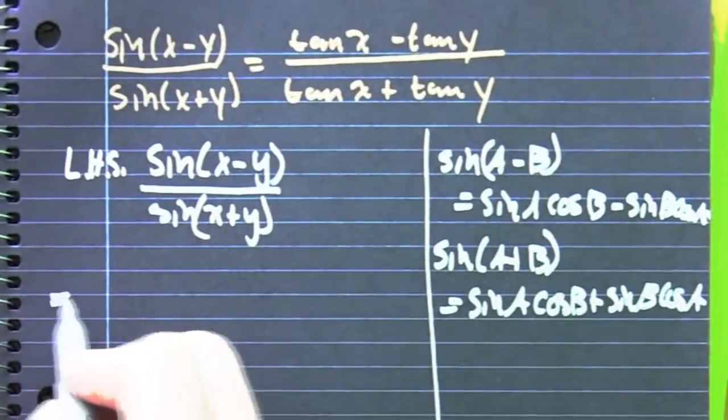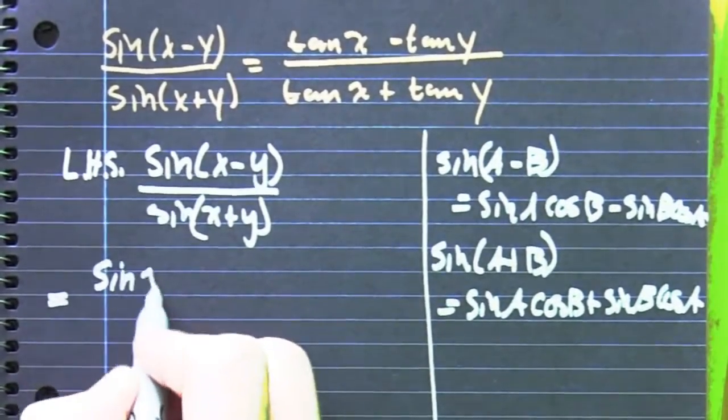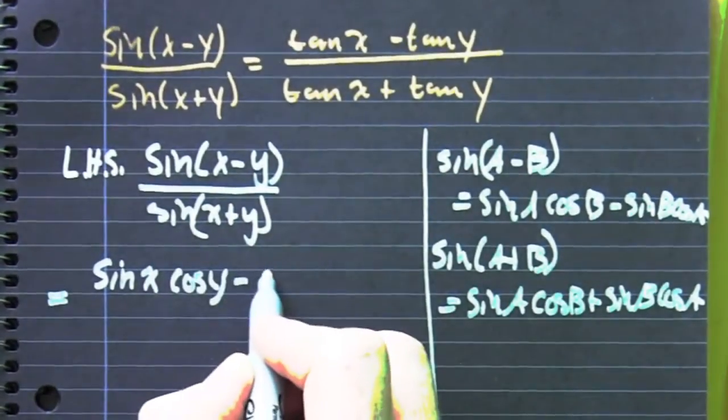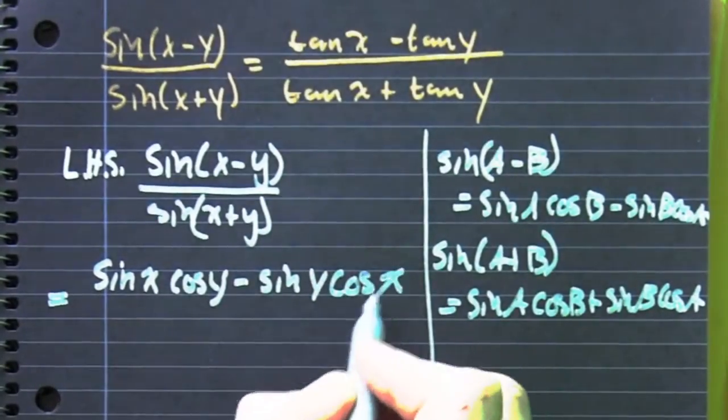Okay. Now, on that left hand side, we're going to go and expand out that guy. The sine of x minus the sine of y. That's the sine of x cosine y minus the sine of y cosine x. What's next?